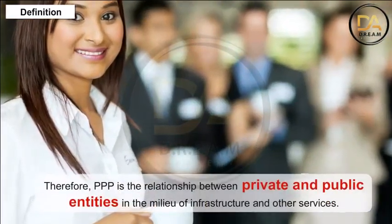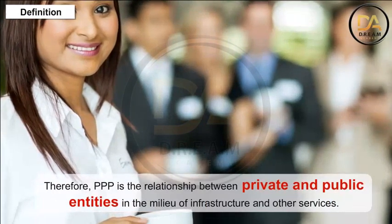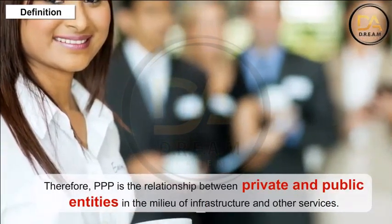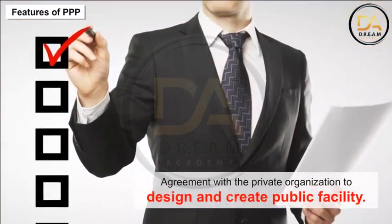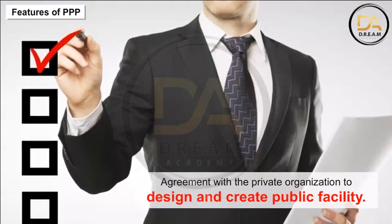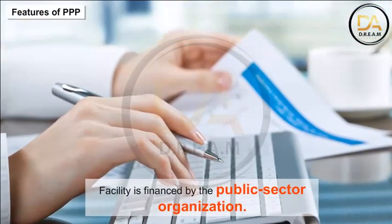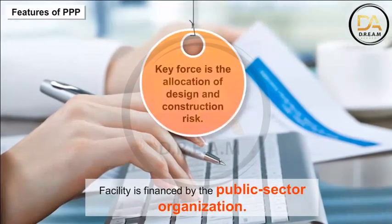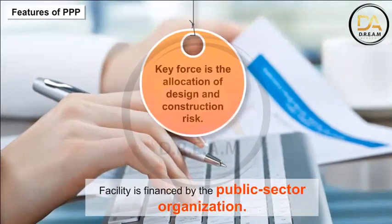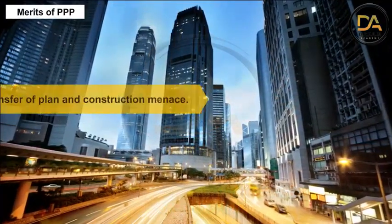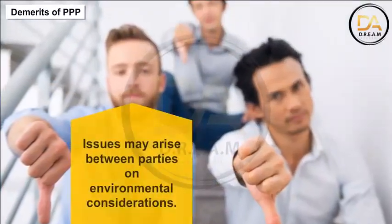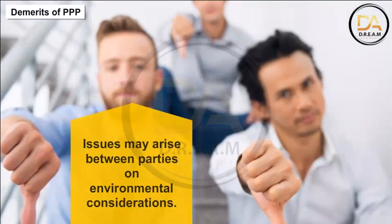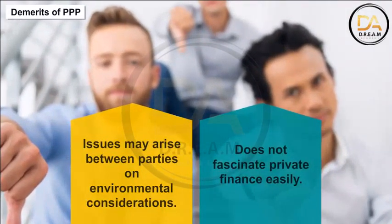Features of PPP: agreement with the private organization to design and create a public facility; the facility is financed by the public sector organization; the key force is the allocation of design and construction risk. Merits of PPP: transfer of plan and construction risk; potential to fast-track project delivery. Demerits of PPP: issues may arise between parties on environmental considerations; does not attract private finance easily.